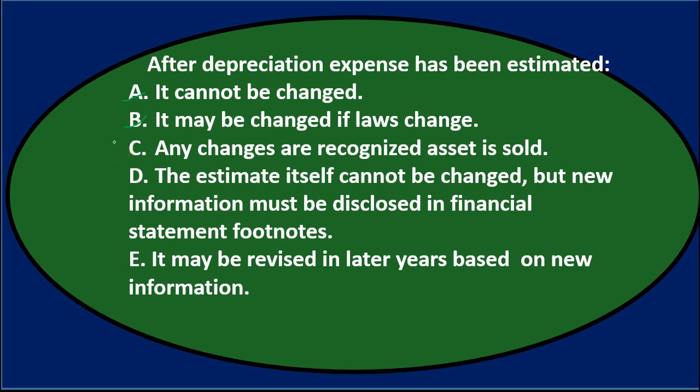C says any changes are recognized when the asset is sold — but we're not really representing the financial statements fairly if we don't adjust the estimate when we have better information, so waiting until sale doesn't seem right. D says the estimate itself cannot be changed, but new information must be disclosed in financial statement footnotes — that seems fairly reasonable. We could say we can't change it now because we've already been running on this estimate, so we'd just put a footnote noting a better estimate based on new information.